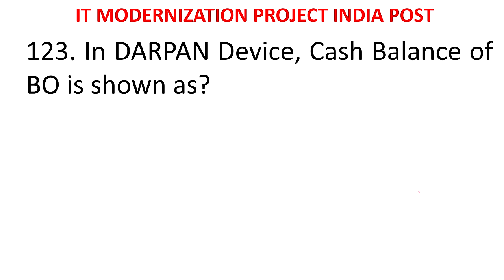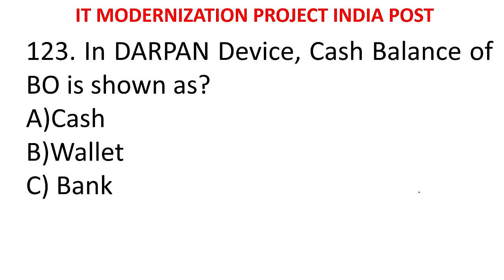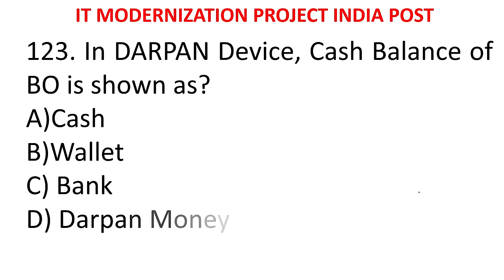MCQ 116: The balance of BO is shown as what in DARPAN device? Cash, wallet, bank, or DARPAN money. The answer is wallet. In the DARPAN device, the cash balance of BO is shown as wallet.